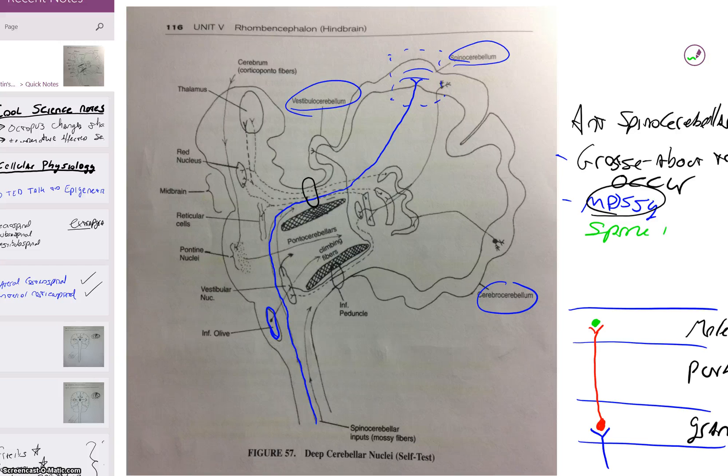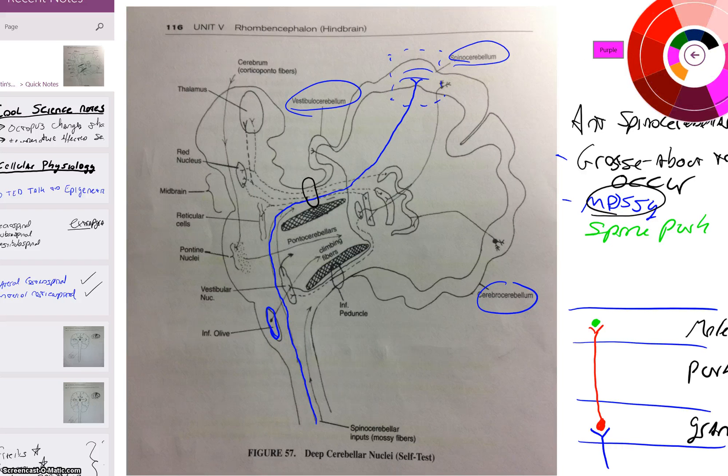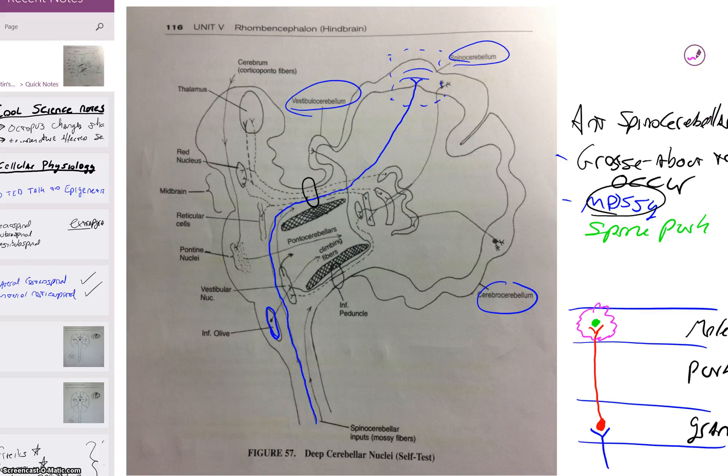So we got spine Purkinje. But it needs to use a chemical. What chemical is it going to use right here? It's going to use glutamate as its chemical. We'll get to why it's not aspartate in the next video. Glutamate is the neurotransmitter that it uses to create that signal. It has an excitatory effect on that Purkinje fiber.